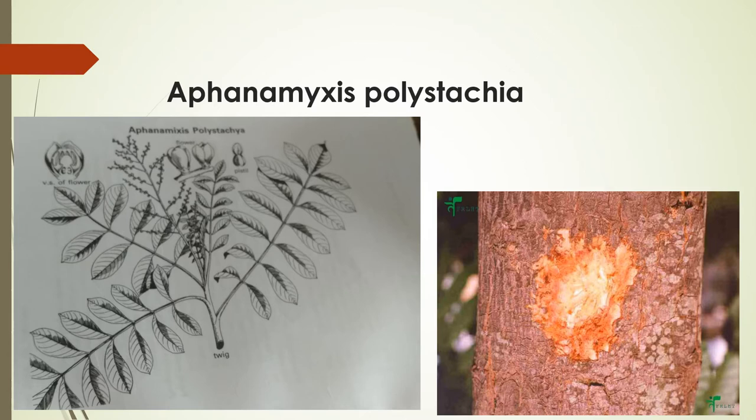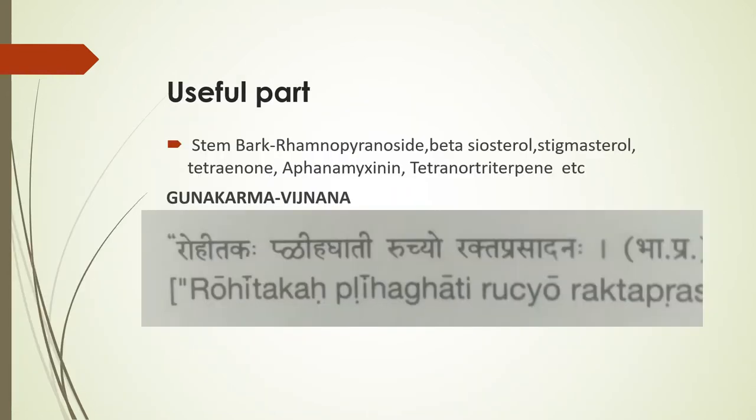In the picture you can see various parts — leaves, inflorescence, flowers, fruits, and bark of Amura Rohidaga or Afanomyxus. The useful part is bark. The stem bark contains rhamnopyranoside, beta-cetosterol, stigmasterol, tetranon, afanomyxenin, tetranor-triturpin, etc.